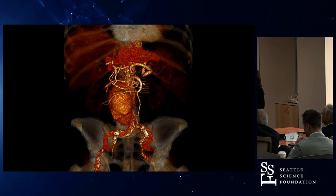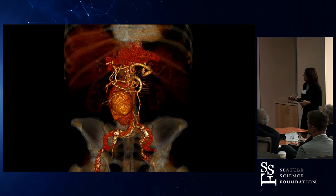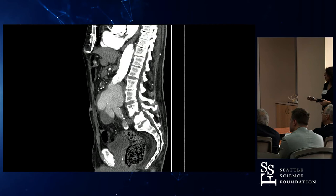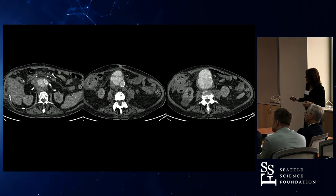Here we have a patient — a CT 3D model. Here's the liver, the heart, and then you've got the aorta, and things are bigger than normal. Here we have the sagittal image showing this multilobulated aneurysm, probably a contained rupture. Here's the calcified aorta — and it's just all going out.